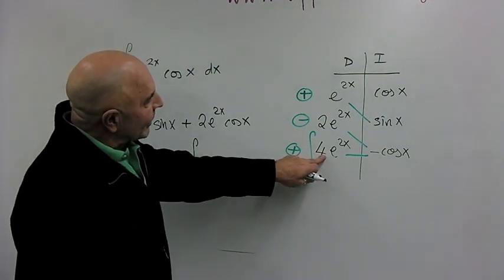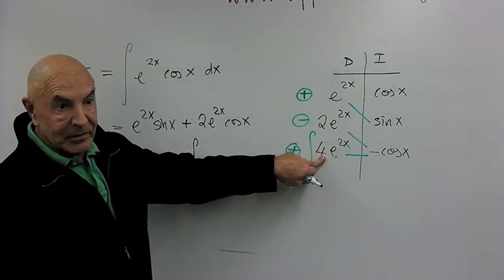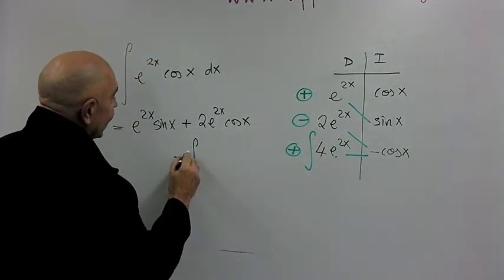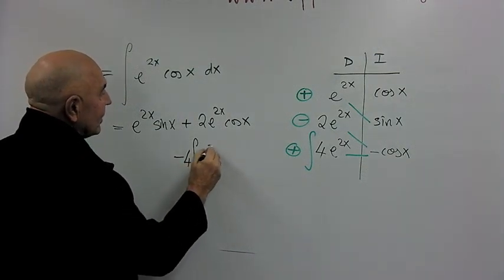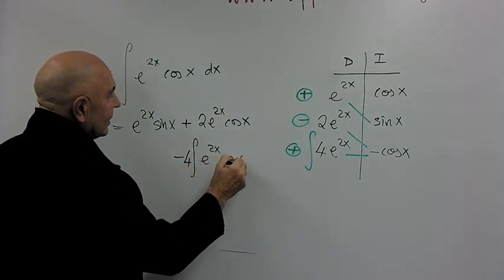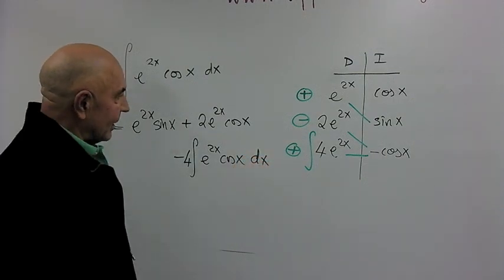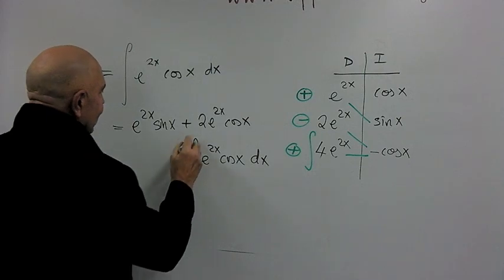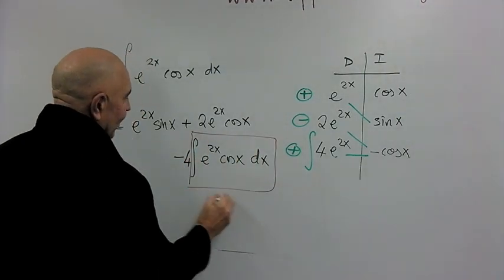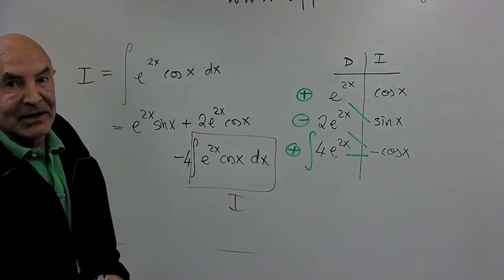And because it's an integral, I can take the constant multiple outside, right in front. And I'll write this as 4 times e to the 2x cosine x behind the integral sign. But wait a minute. This is Igor once again.